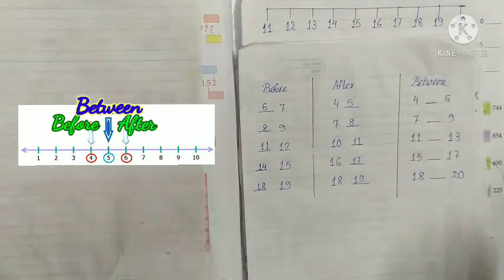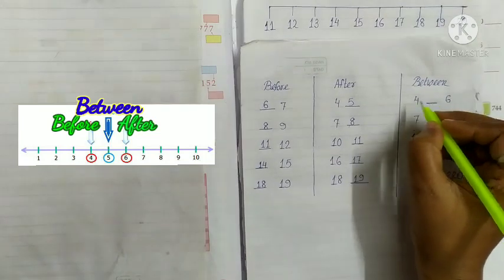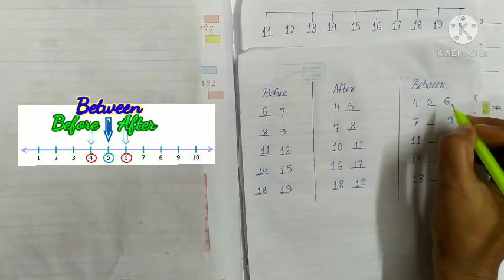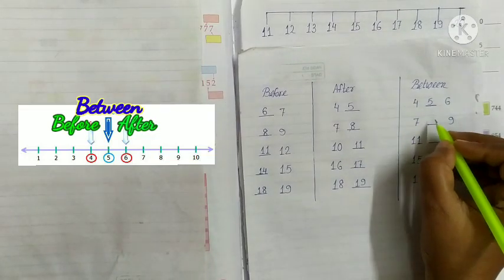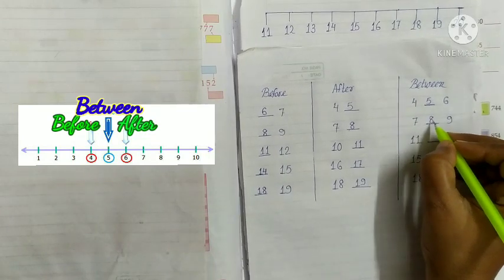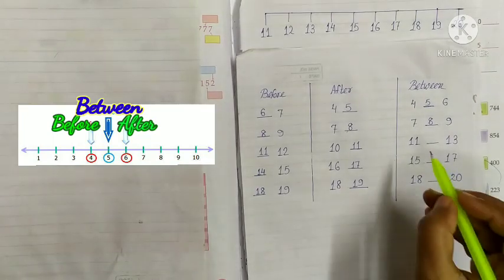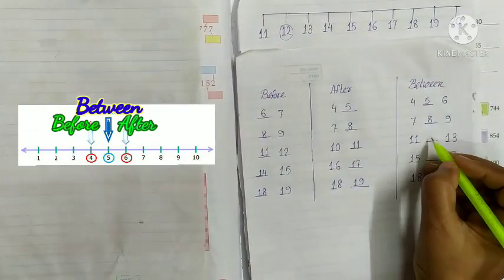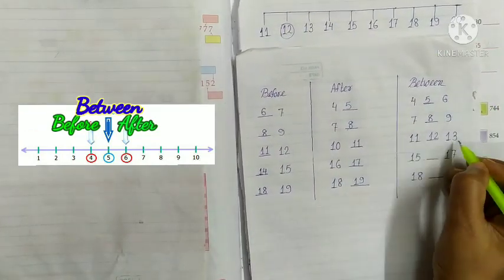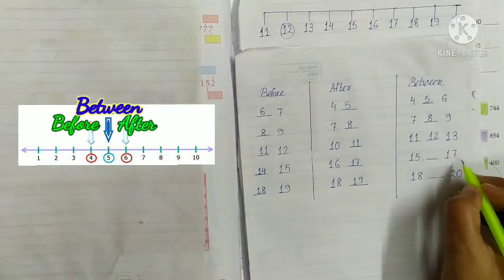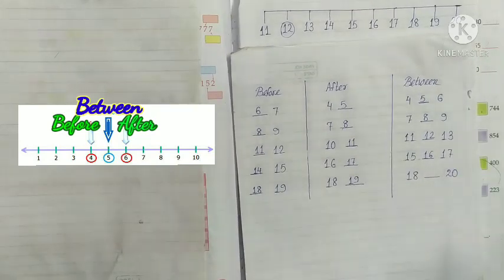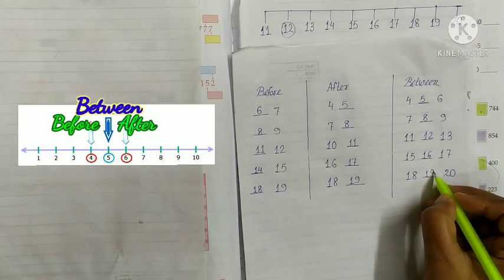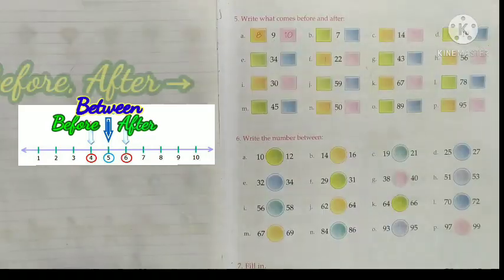Now let's solve between numbers. Between means middle number. 4 and 6: 5 is between 4 and 6. 7 and 9: 8 is between 7 and 9. Next, 11 and 13: the middle number is 12. 12 is between 11 and 13. Next, 15 and 17: 16 is between 15 and 17. Next, 18 and 20: 19 is between 18 and 20.